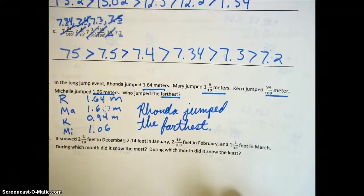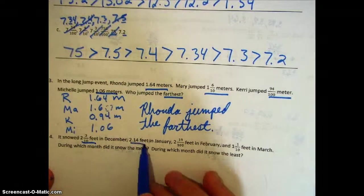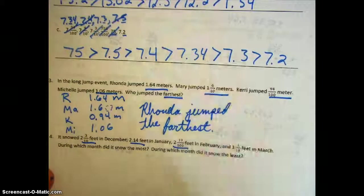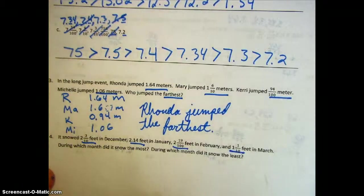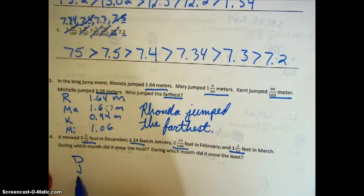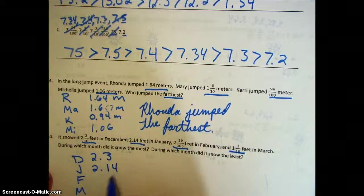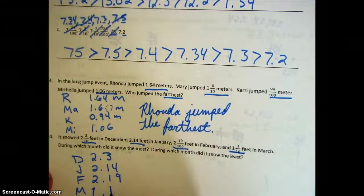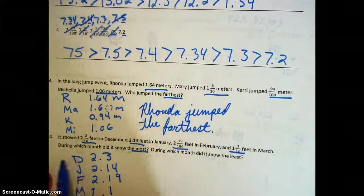Moving on to the last problem, number four. It snowed two and three-tenths feet in December, two and fourteen hundredths feet in January, two and nineteen hundredths feet in February, and one and one-tenth feet in March. We're going to line these up and convert into decimals. Looking at our numbers, we can see the most snow was in December.